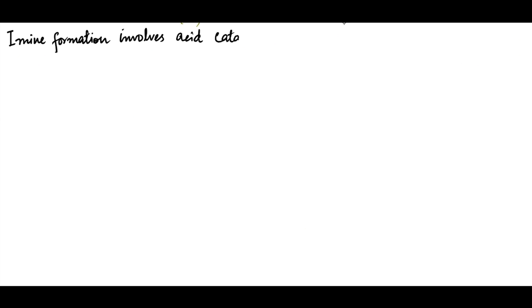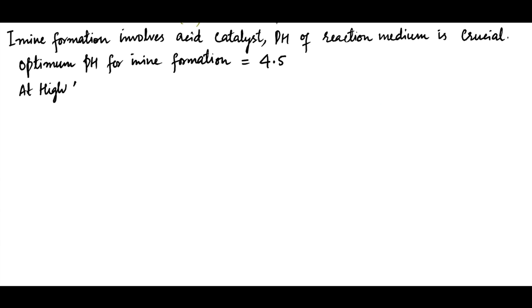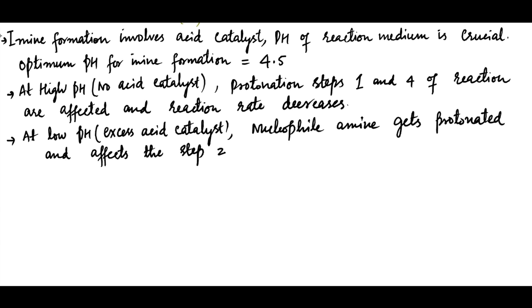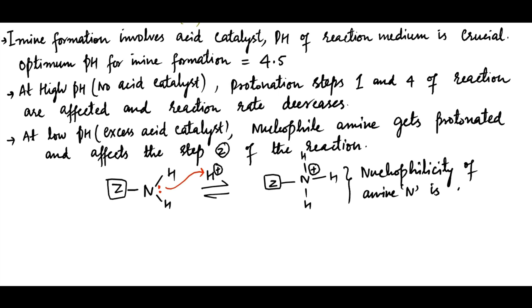Imine formation involves acid catalyst, therefore pH of the reaction medium is crucial. The optimum pH for imine formation is around 4.5. At high pH, that is, if no acid catalyst is used, step 1 and step 4 of the reaction are affected, and reaction rate decreases. At low pH, that means if too much acid is used, most of the amine molecules will be protonated and affects the step 2 of the reaction. Thus under high acidic conditions, amine nucleophile gets protonated, due to which nucleophilicity of amine nitrogen is lost. Thus optimum pH is 4.5. As a result, care must be taken to ensure optimal pH of the solution during imine formation.